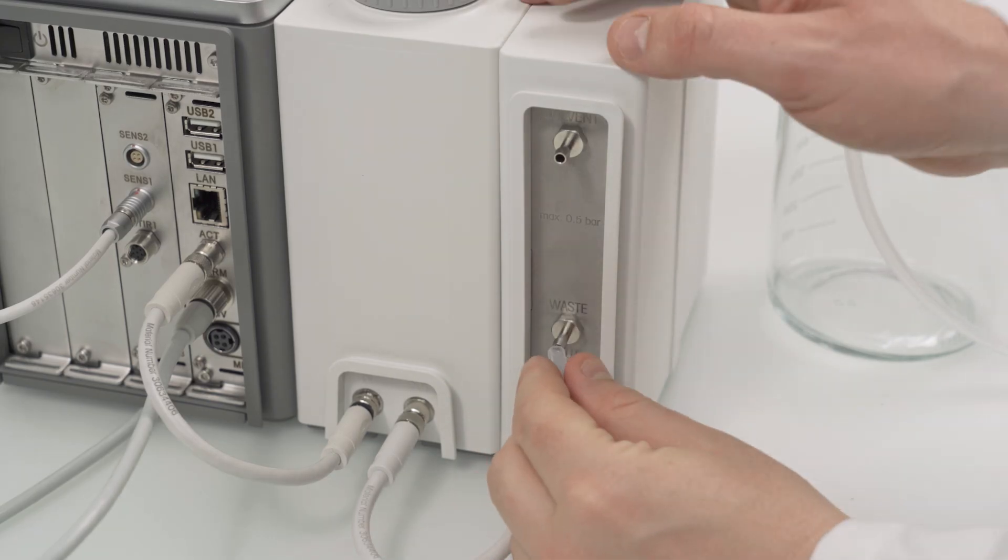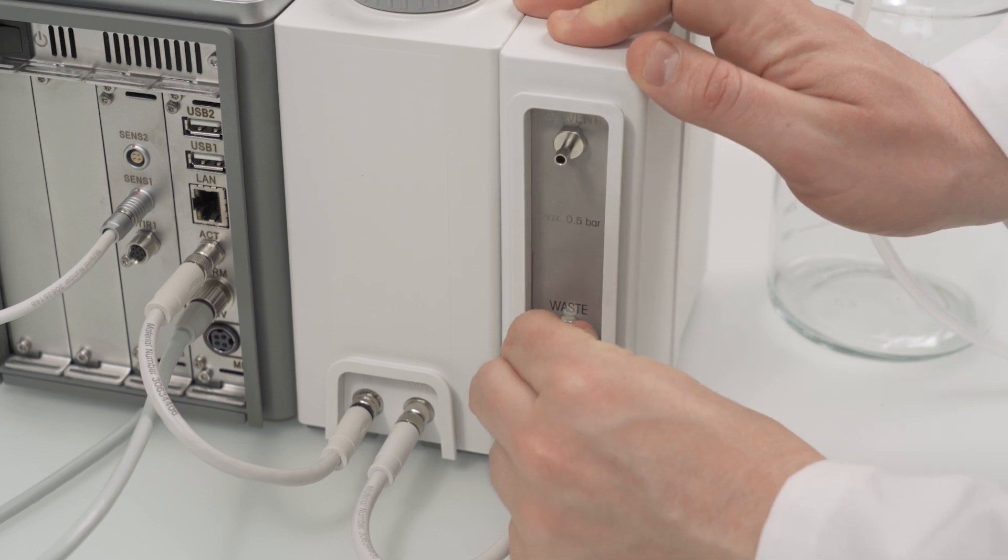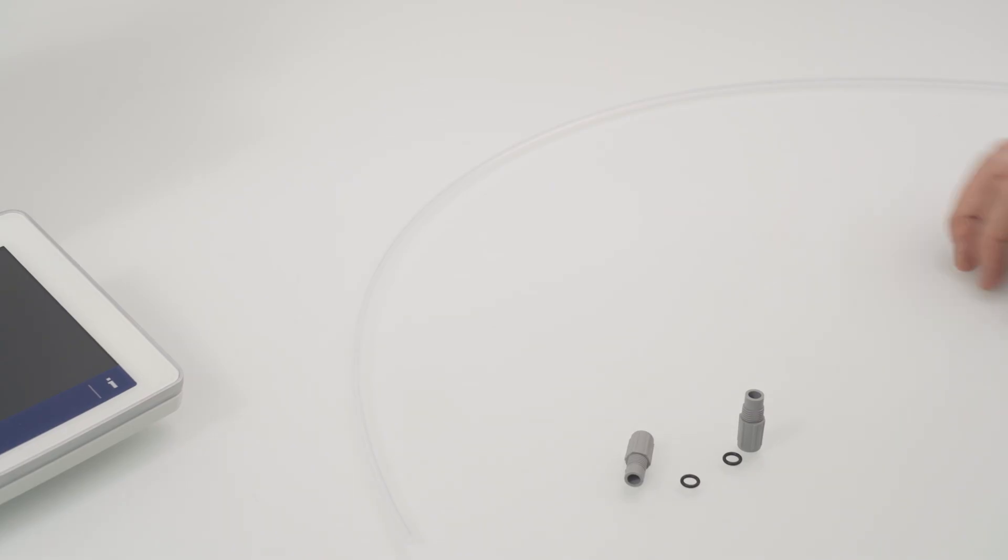Use one of the two long air tubes to connect the drying tube with the fitting on the back of the D-Pump KF.